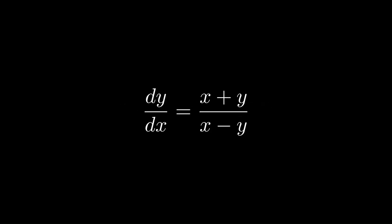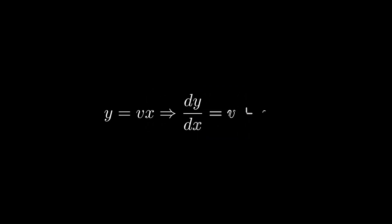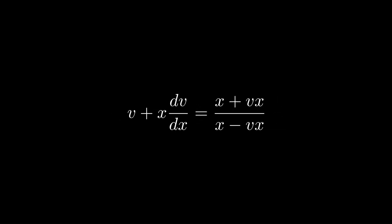Next is the homogeneous ODE. We have homogeneous functions of the same degree — in this case, a first-degree function over a first-degree function. You'll want to use the substitution y = vx, then differentiate both sides to get v + x(dv/dx).